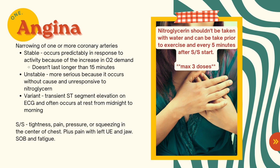Additional signs and symptoms include pain in the left upper extremity and jaw, and shortness of breath and fatigue. Going back over the three categories: stable occurs predictably with activity and doesn't last longer than 15 minutes, while unstable is more serious because it occurs without cause. Variant often occurs at rest from midnight to morning — those are the major differences between those three.